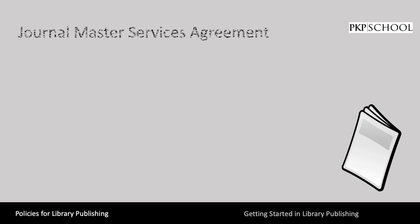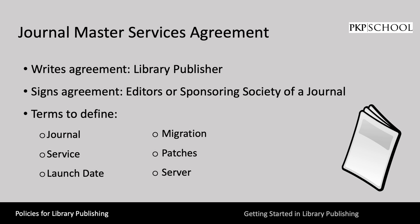The second type of legal agreement we'll be discussing is the Journal Master Services Agreement. A Master Services Agreement for Journals, or MSA, is a governing agreement between you and the editors or sponsoring society of a journal to host and disseminate their journal through the publishing platform or printer or both. The terms you see on this slide are just some examples of terms you may want to define within your agreement, with basic terms like journal, service, and launch date, to technical terms such as migration, patches, and server. Depending on the services provided and the expectation of library administration and general counsel, your MSA may include some of the components on the following slide.